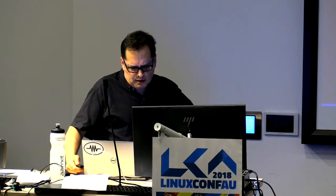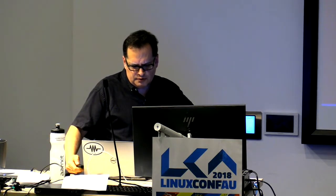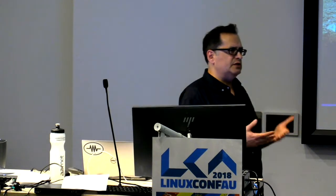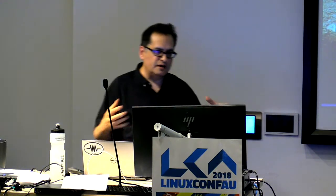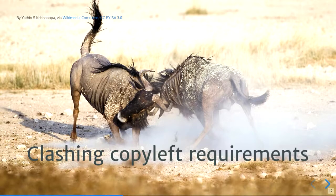I want to talk about two particularly important categories. The first is clashing copyleft requirements. One of the basic principles everyone accepts is that two different copyleft requirements — license A requiring derivative works be licensed under A, and license B requiring they be licensed under B — potentially creates a conflict if you combine code into one meaningful unit, at least if one of the licenses is the GPL. This seems fairly straightforward, though you can imagine developing an interpretive approach that would harmonize two seemingly clashing copyleft requirements. We have a basic understanding that GPL v2 by default is incompatible with GPL v3, and vice versa.